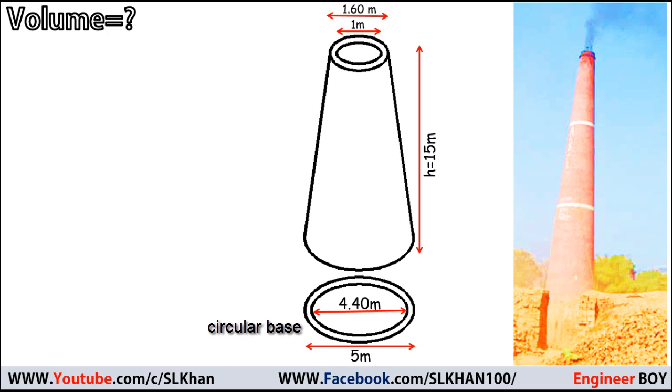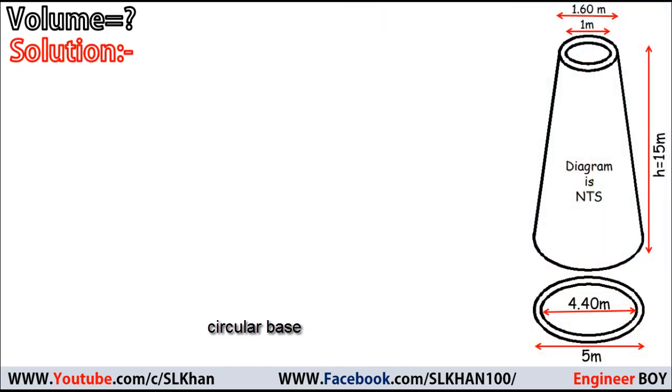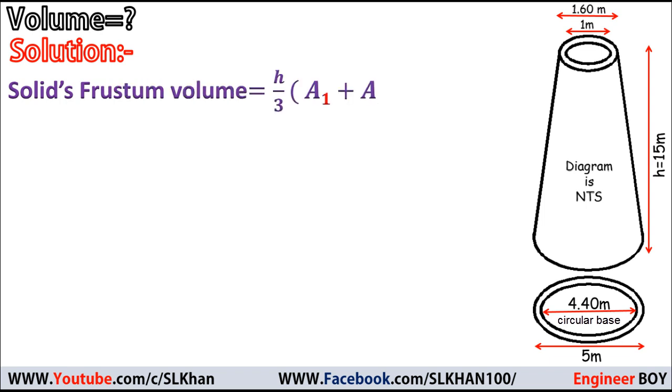As you can see, the data is given, so I'll come directly to the solution. If you remember the previous video for the volume of a truncated cone, we used this formula for a solid frustum volume. This is a simple formula: h/3 times (A₁ + A₂ + √(A₁·A₂)).